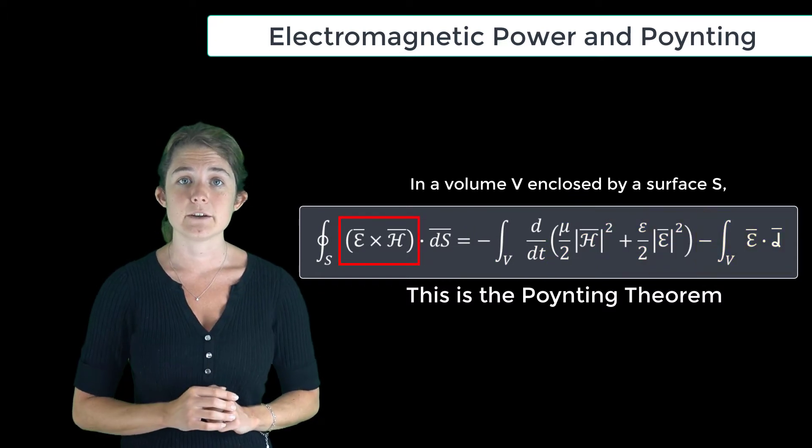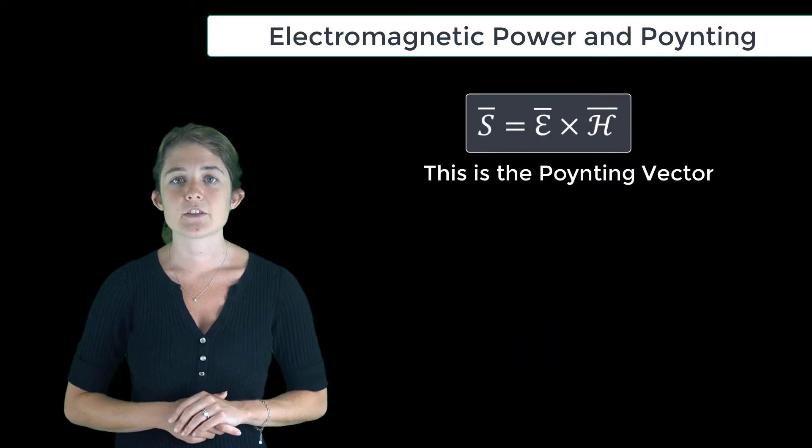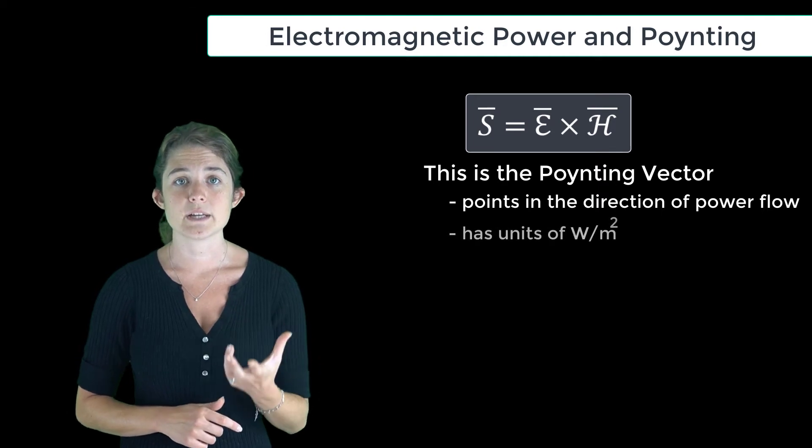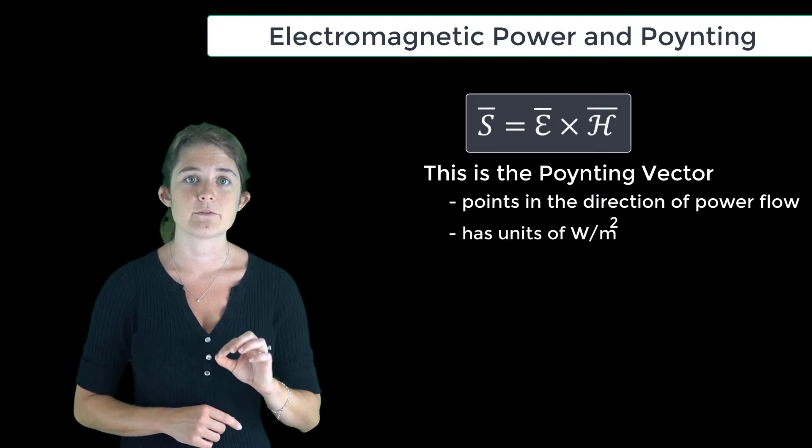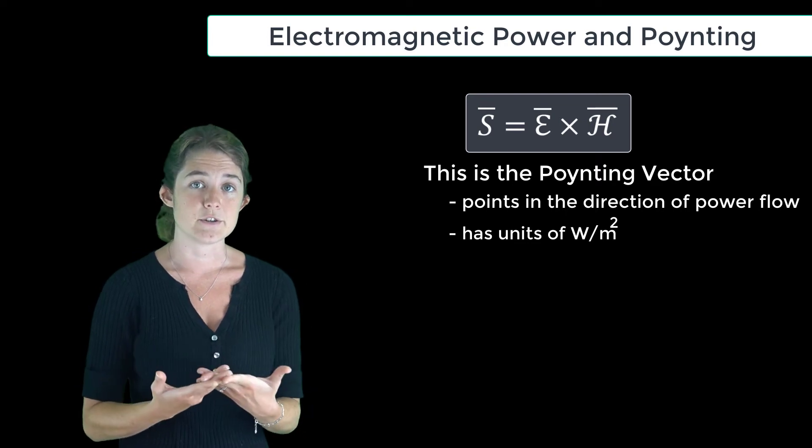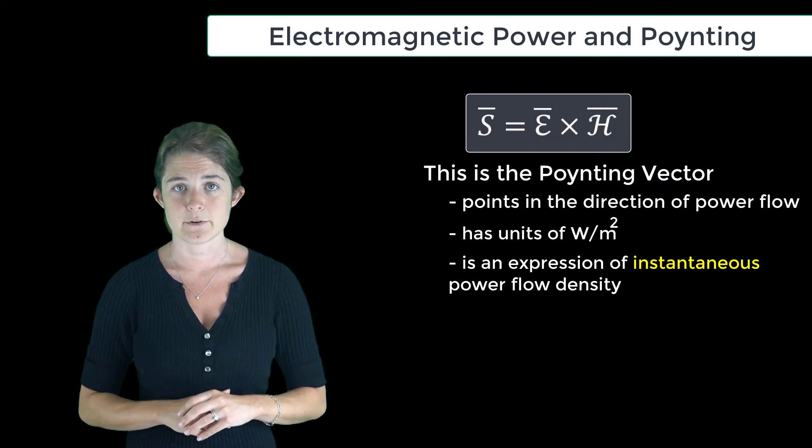We will also define this term E cross H as the Poynting vector. This is a vector that points in the direction of power flow and it has units of watts per meter squared, which is a power flow density. Note that since both E and H are in the time domain, this is an expression of instantaneous power flow density.